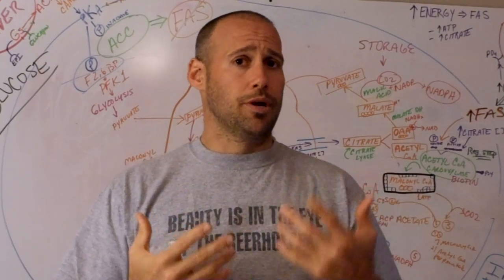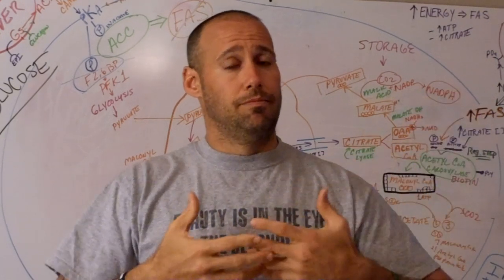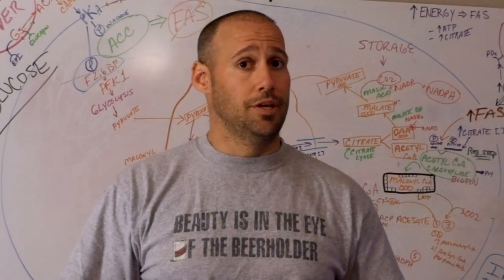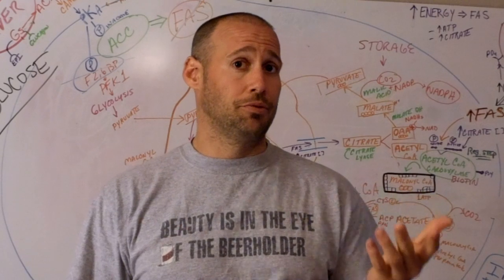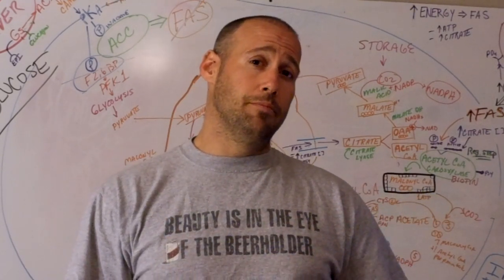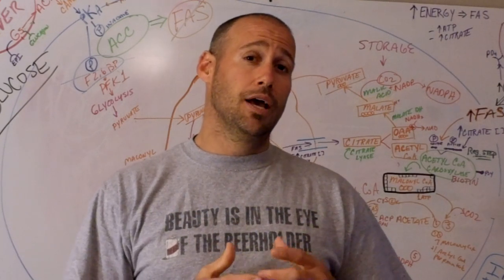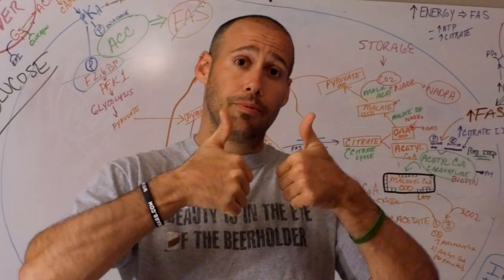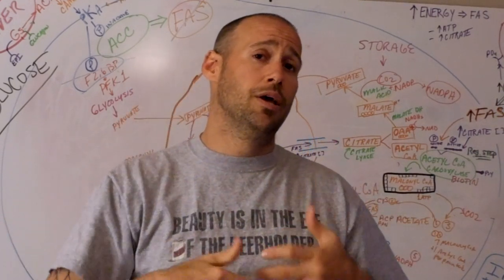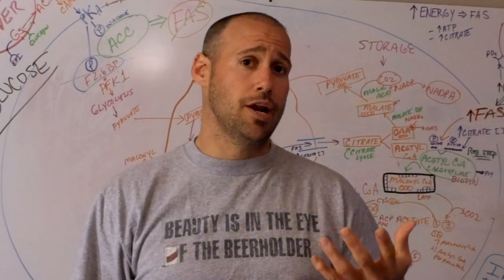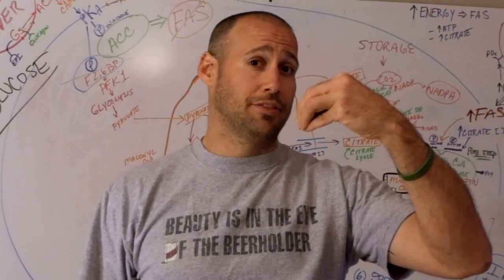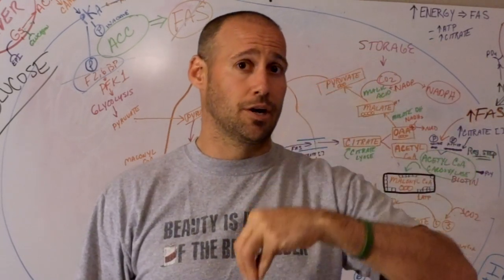When we breathe in, the diaphragm contracts through the C3-4-5 phrenic nerve — C3-4-5 keeps the diaphragm alive. The diaphragm drops, the volume goes up, and Boyle's law states that if the volume goes up, the pressure goes down. When the pressure goes down, that creates a pressure gradient, and the air from the outside flows to the path of least resistance, so the air comes in.